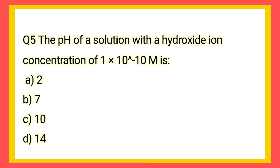Question 5: The pH of a solution with hydroxide ion concentration of 10 raised to power minus 10 mole. The answer is 10. Option C is the correct answer.